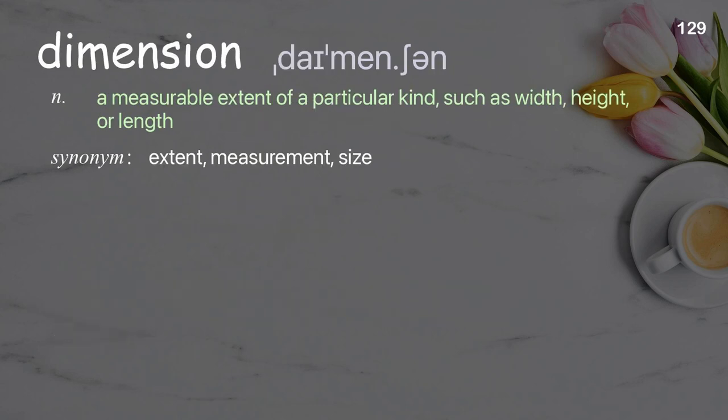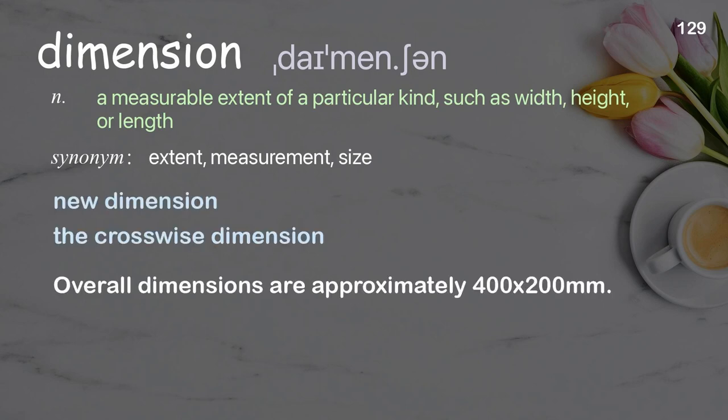Dimension. A measurable extent of a particular kind, such as width, height, or length. Examples: new dimension, the crosswise dimension. Overall dimensions are approximately 400 by 200 millimeters.